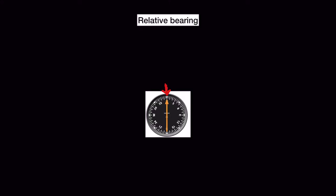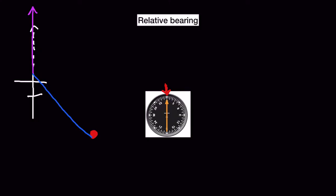Relative bearing is the bearing of the beacon with respect to the nose of the aircraft. Let's say this is an aircraft flying in a certain direction and we have a beacon over here. The relative bearing of this beacon will be the angle it makes with the nose of the aircraft. Relative bearing is always measured from the nose of the aircraft in the clockwise direction.